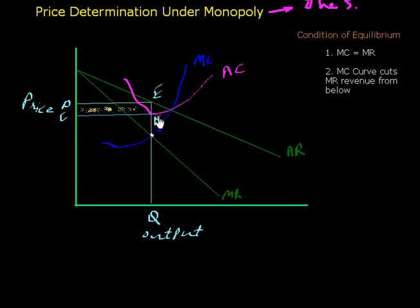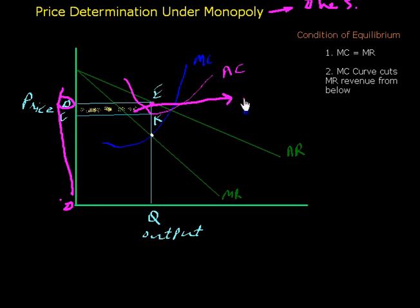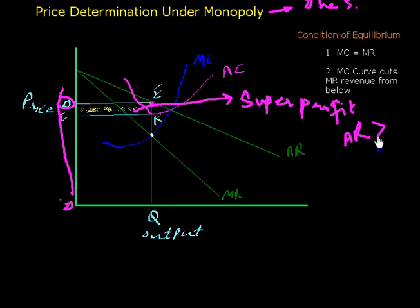In the first situation, price will be determined at equilibrium point E, meaning price will be zero to P. Now, average cost is less than average revenue, so the seller will get super profit. This is super profit because at this point average revenue is more than average cost.